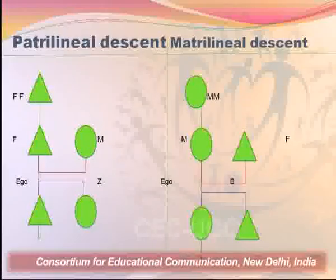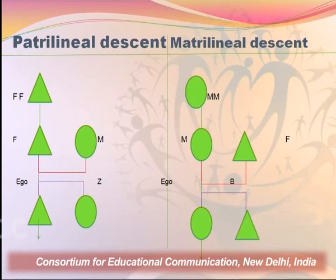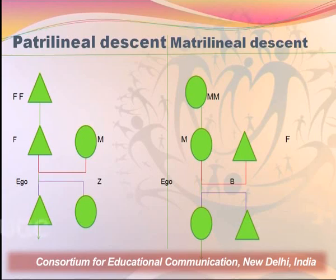Looking at the diagram of patrilineal and matrilineal descent on the left side, we see the triangles are connected with a single red line, and then the last triangle and circle are connected through a blue line. These clearly show the ego, the father, and the father's father, along with ego's sister and ego's mother. The line of descent is through the male, and the arrow pointing downward tells us about the continuity of the lineage going further.